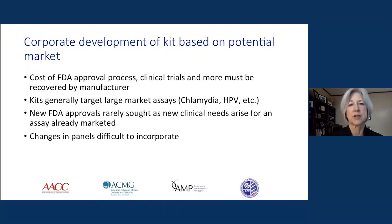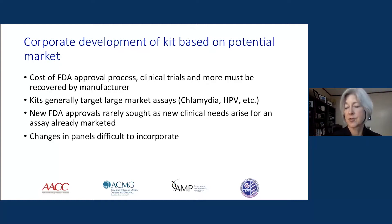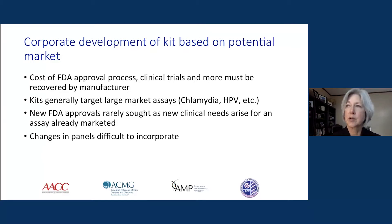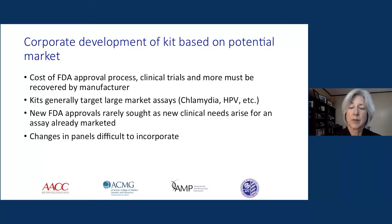The corporate development of kits requires manufacturers to recover the cost of the FDA approval process and clinical trials. They're making an investment in developing these assays and need to be certain they'll recover that expense after receiving FDA approval. As a result, kits generally target very large market assays — things where there's enough market to support the investment made. Analytes include many molecular microbial assays such as HPV, chlamydia, and HIV. Rarer or less common assays, even though extremely important clinically, are not developed by companies because there's simply not enough market share to support the investment.